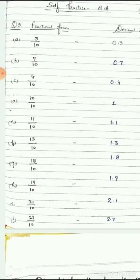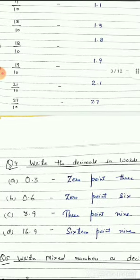15 parts out of hundred, 32 parts out of thousand. A decimal fraction is a fraction whose denominator is either 10, 100, or 1000 — or a power of 10. Now write the decimals in words.